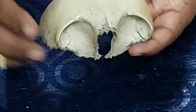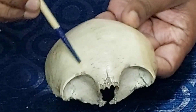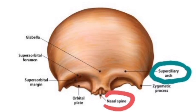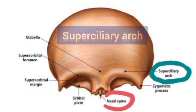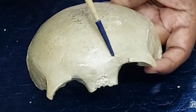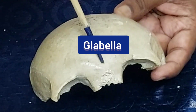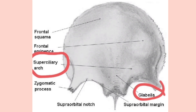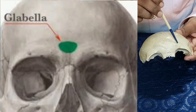Another prominence over the supraorbital margin is a rounded elevation on the external surface called the supraciliary arch. The supraciliary arches meet in the midline at a point called the glabella. The supraciliary arch is more prominent in males due to the size of the frontal sinus present deep to it.